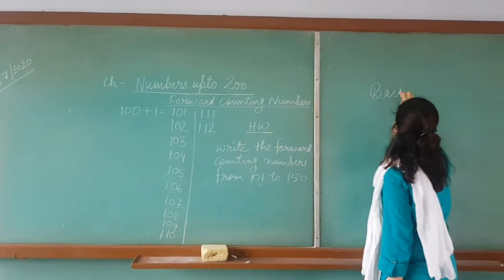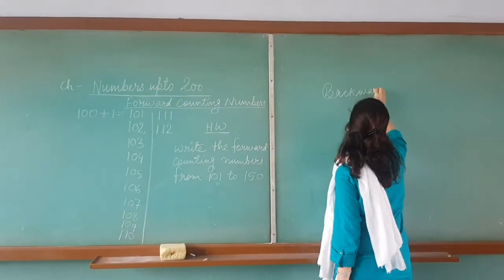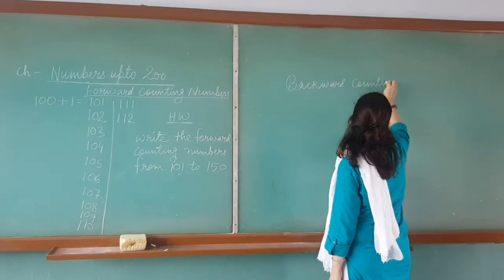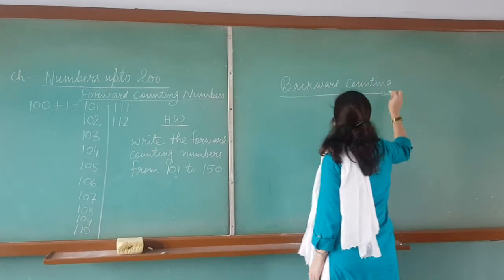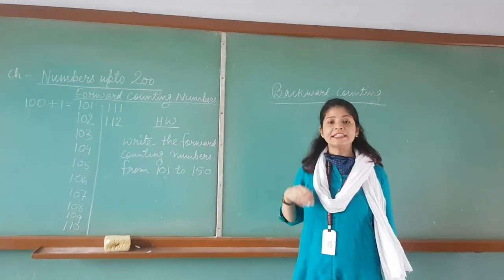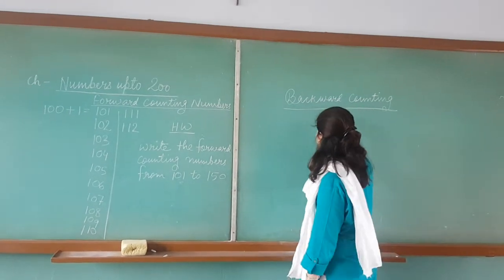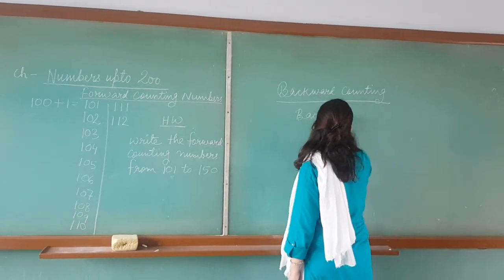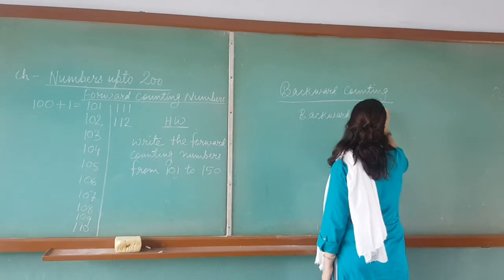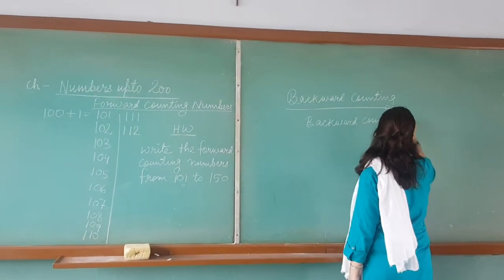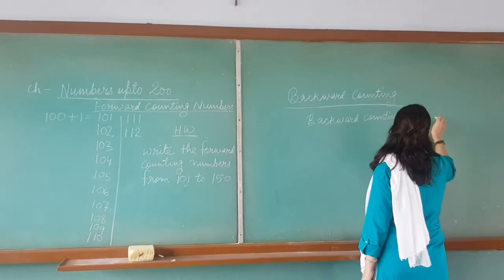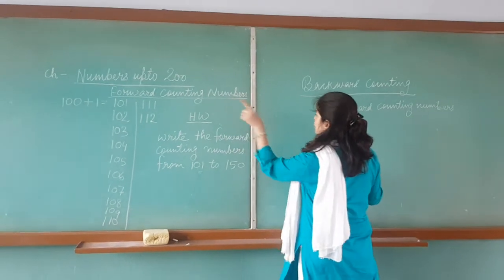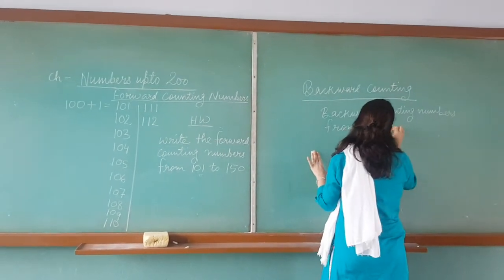Now we will do backward counting. What do we mean by backward counting? We have already learned these numbers up to 100. What we are supposed to do here, we have to take the predecessor of the number. Suppose we have to write the backward counting numbers from 200 — as we have to cover till 200 — from 200 to 150.